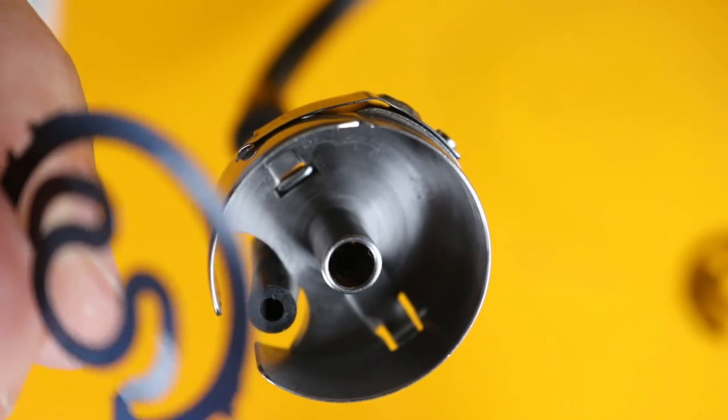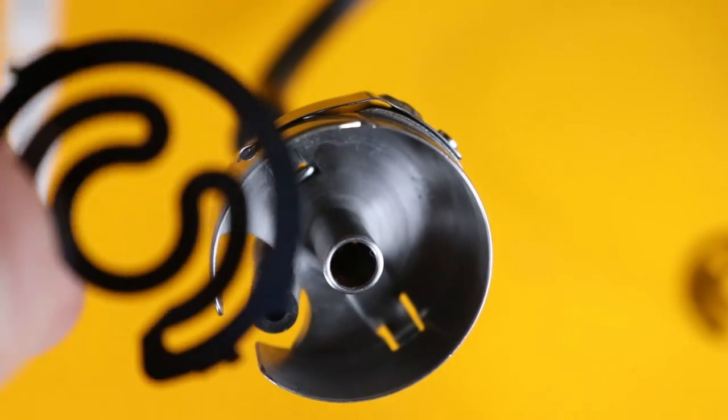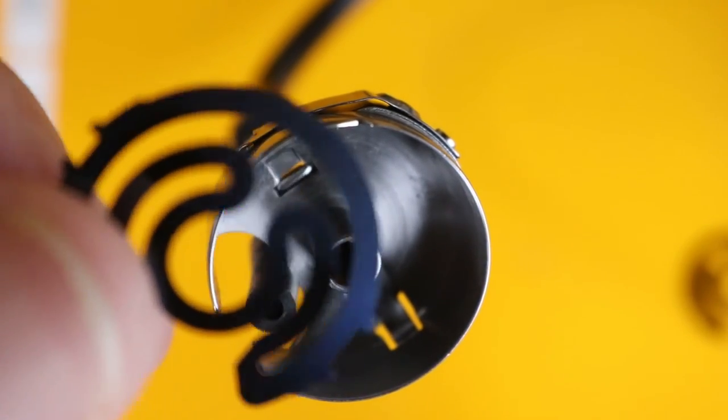To install the new spring, orient it so that the center is away from the base of the bobbin case. It'll be elevated.